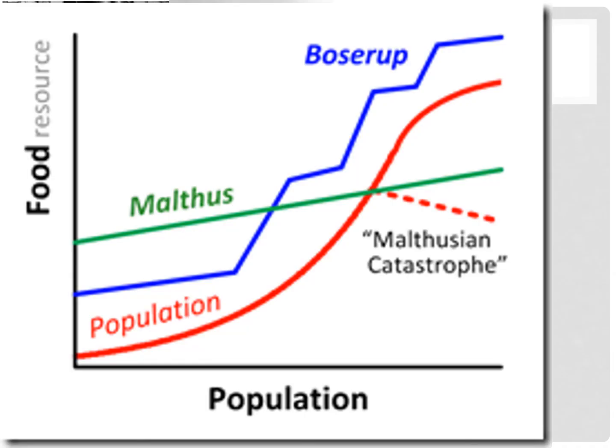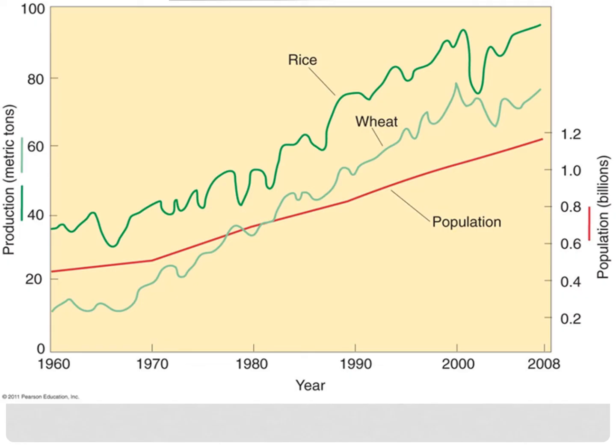Remember, Malthus believed that population would grow geometrically while food would grow arithmetically. Eventually the population would exceed the carrying capacity, which would lead to a Malthusian catastrophe like famine, disease, or war, and the population would be brought back beneath the carrying capacity. Boserup, on the other hand, argues that the food supply would stay a few steps ahead of population growth through intensification and innovation. This is a good example of possibilism. And as we can see, that's exactly what has happened.